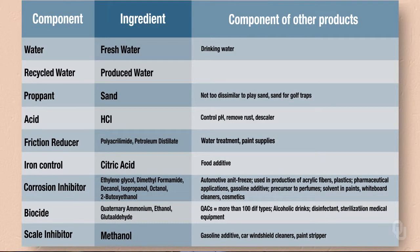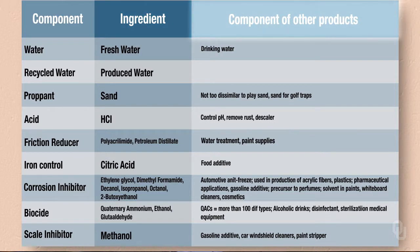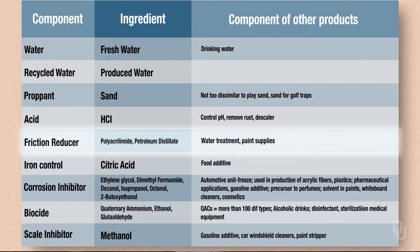This next table shows where these same chemicals are used in other industries and in other applications. Shown here are the components on the left — particularly those that cause the most environmental concern — the actual ingredients in those components, and where these same ingredients are used in other products. For instance, with friction reducers, these are often used in water treatment and in paint supplies.